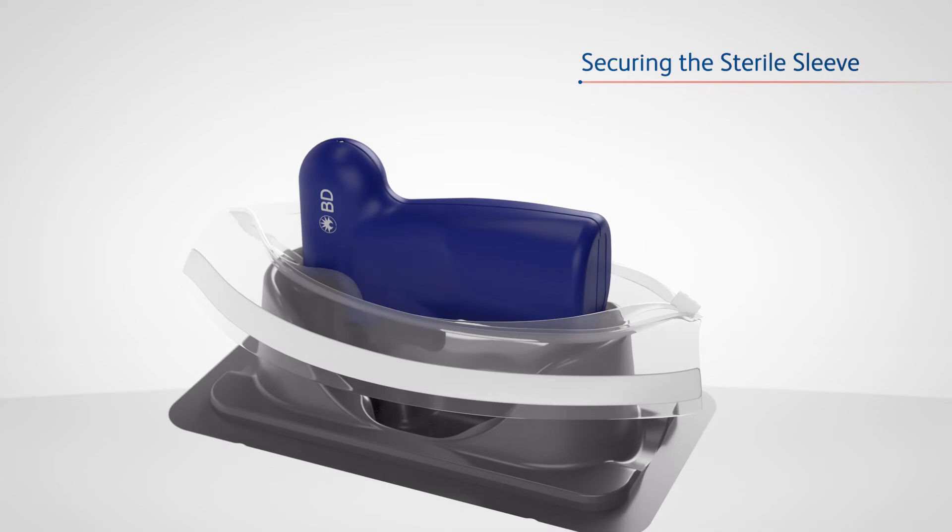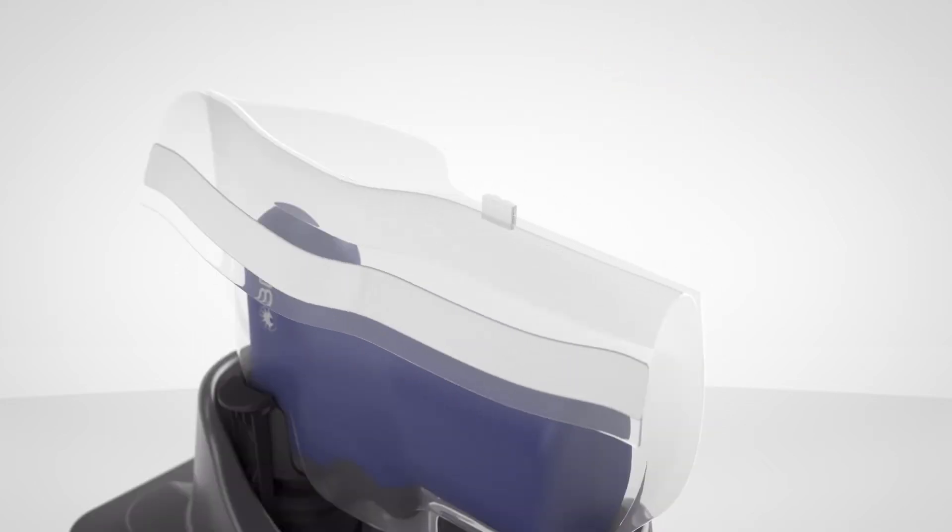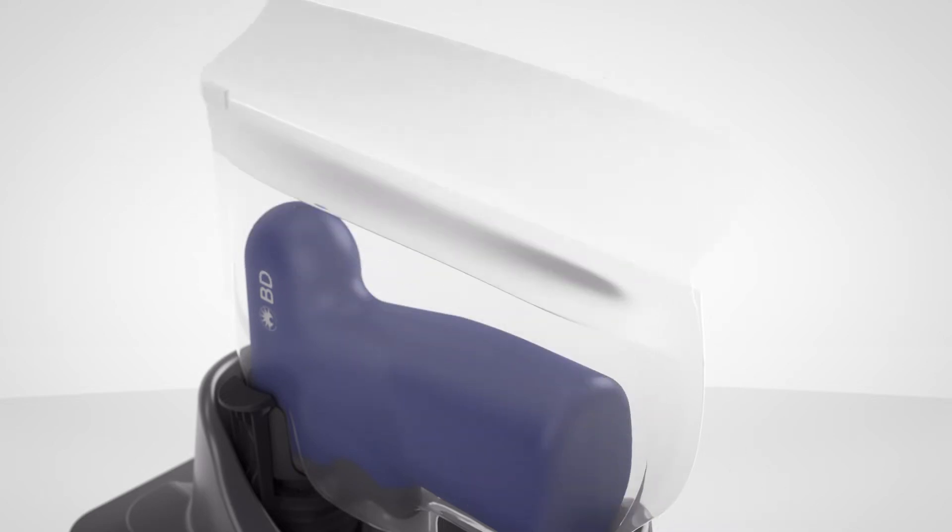The sterile sleeve features a zip closure and adhesive strip for secure and easy setup. Pull up the sides of the sleeve and seal the sleeve with the zipper. Peel the paper backing from the adhesive strip and fold the flap onto the sterile sleeve.